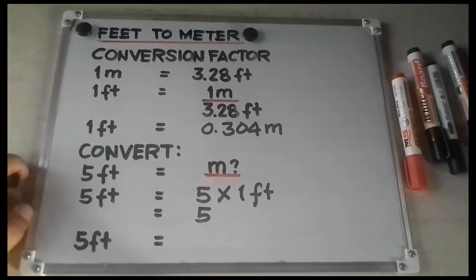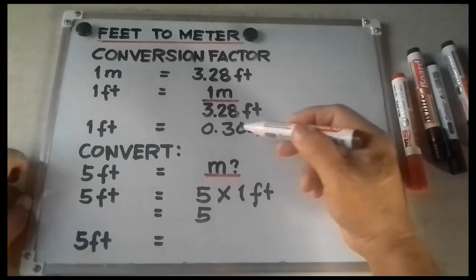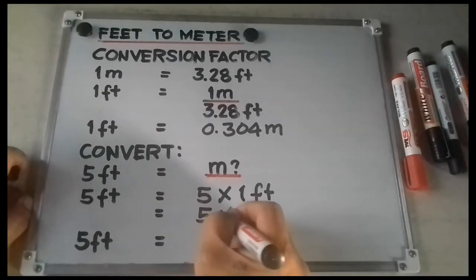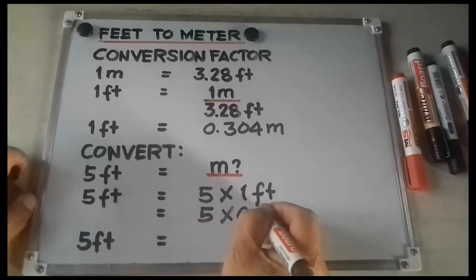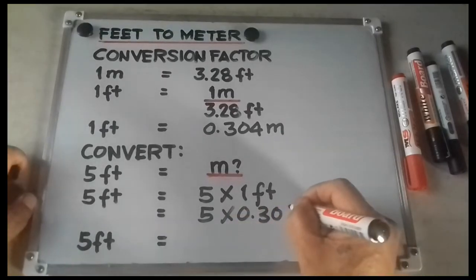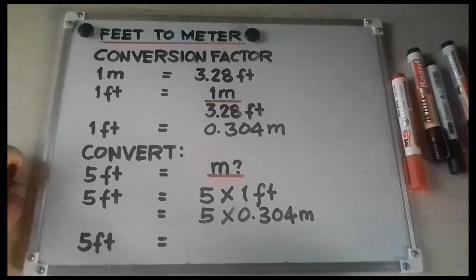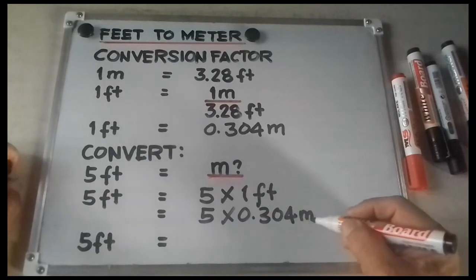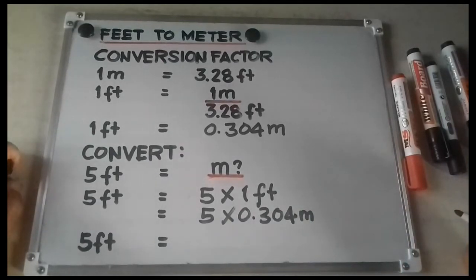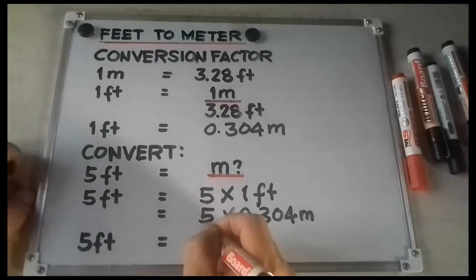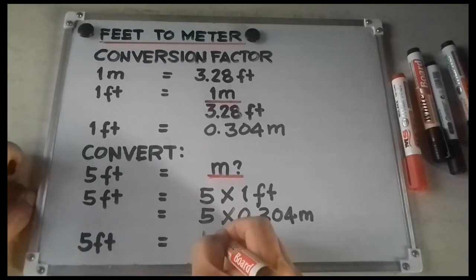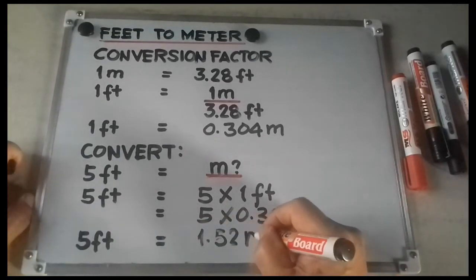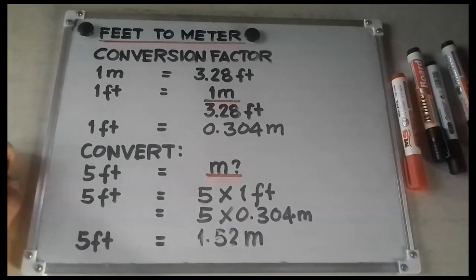And multiply it by 0.304 meters. 5 times 0.304 meters, and that is 1.52 meters.